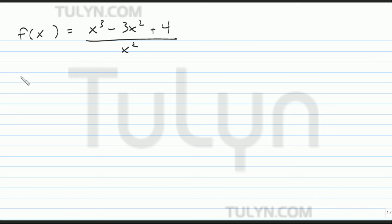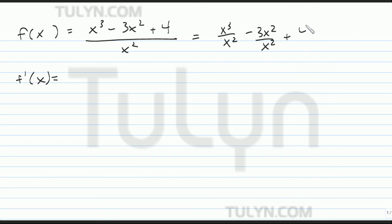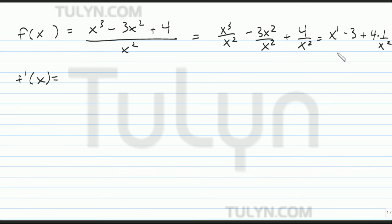So if you're going to find the derivative of this, you've got to go ahead and divide each term by x squared. So x to the third divided by x squared, minus 3x squared divided by x squared, plus 4 divided by x squared. That's going to equal x to the first power minus 3x plus 4 times 1 over x squared, which simplifies to x to the first minus 3 plus 4 over x squared.